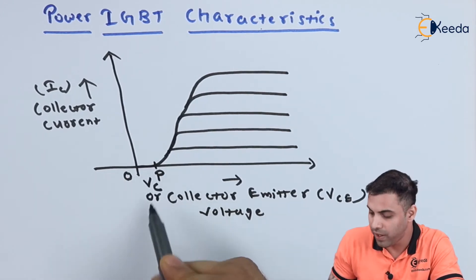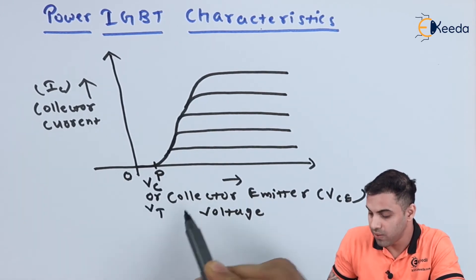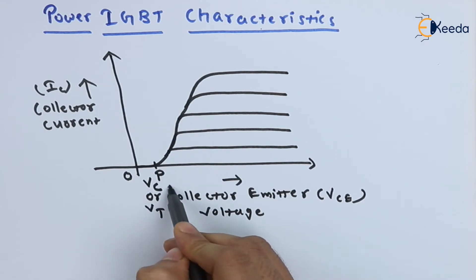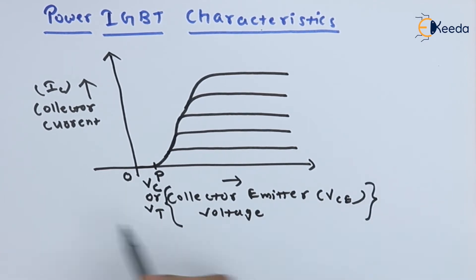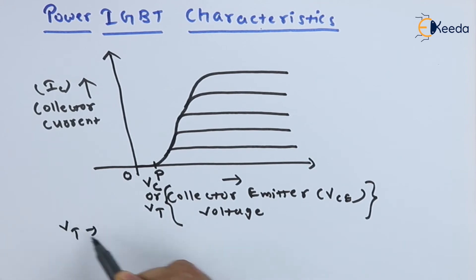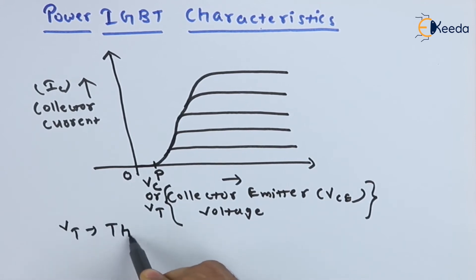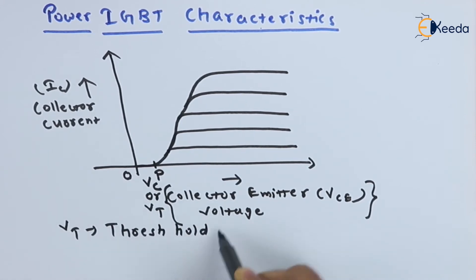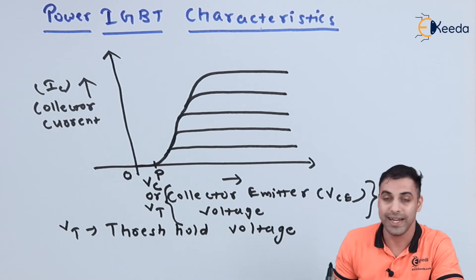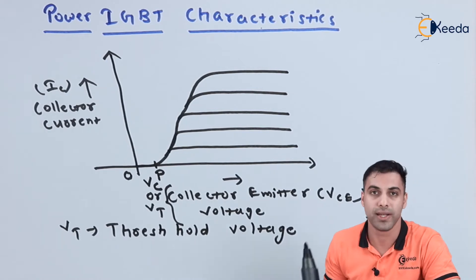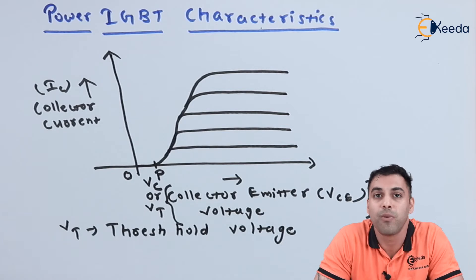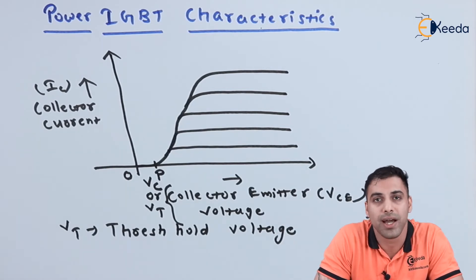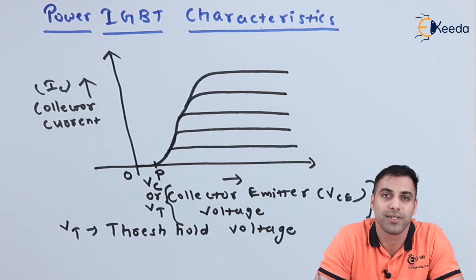So point P is called VCE(th) or VT, the threshold voltage. The threshold voltage is the value of collector-emitter voltage at which the collector current starts flowing through the circuit, or the power IGBT starts conducting.